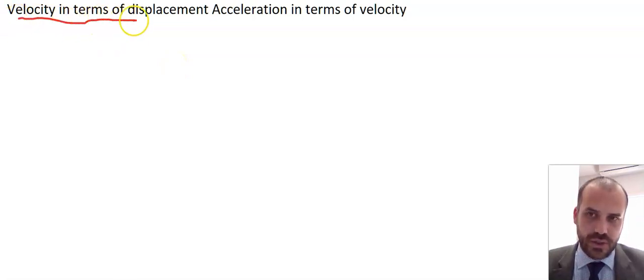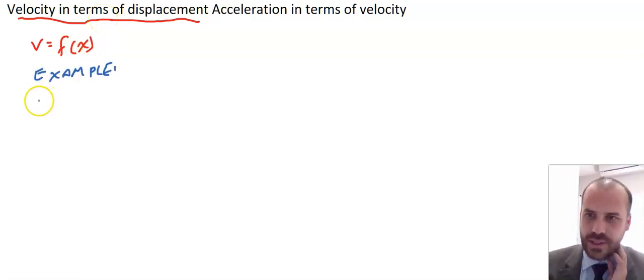Express velocity in terms of displacement. So what that looks like is velocity is equal to some function of displacement. The example of this might be velocity equals 2x.